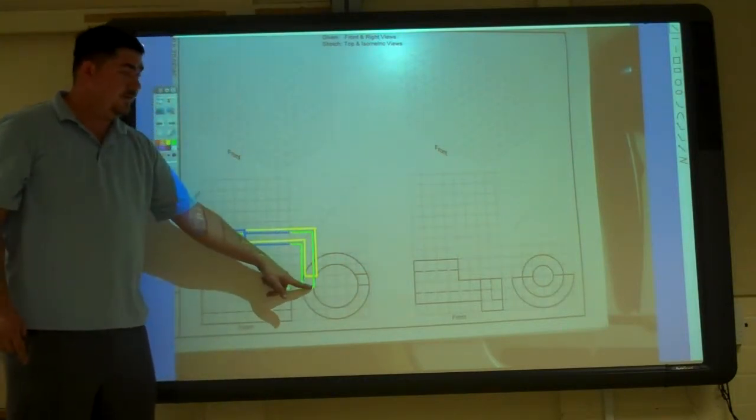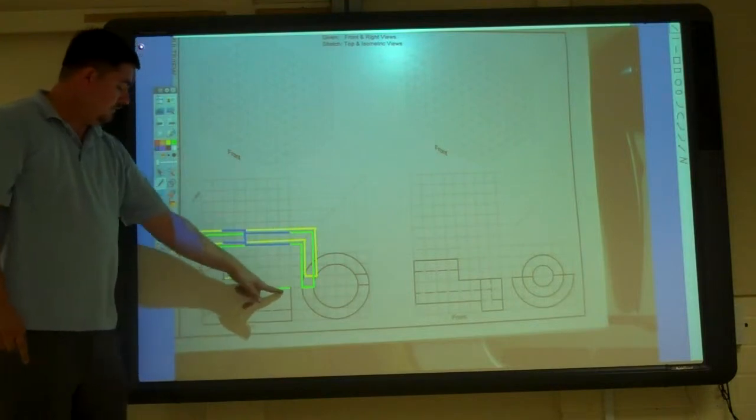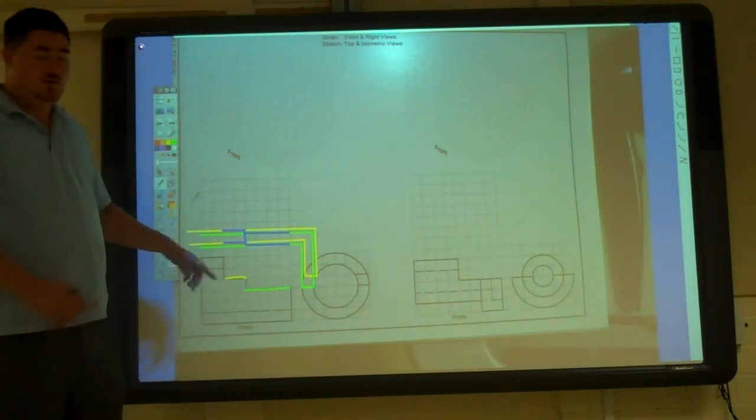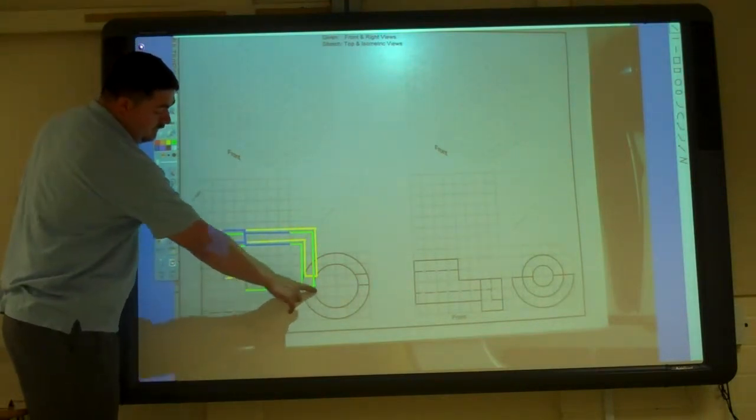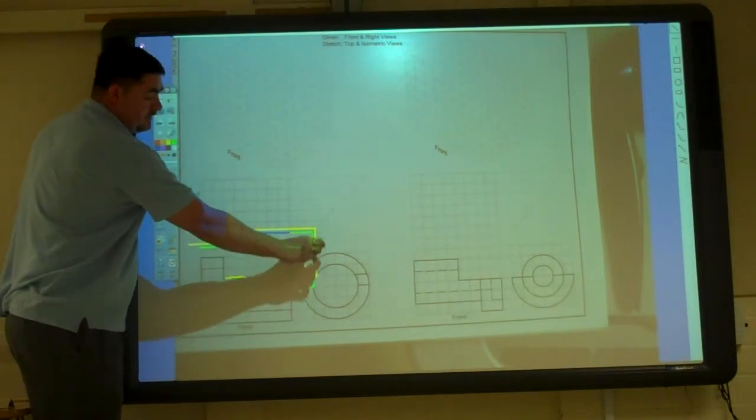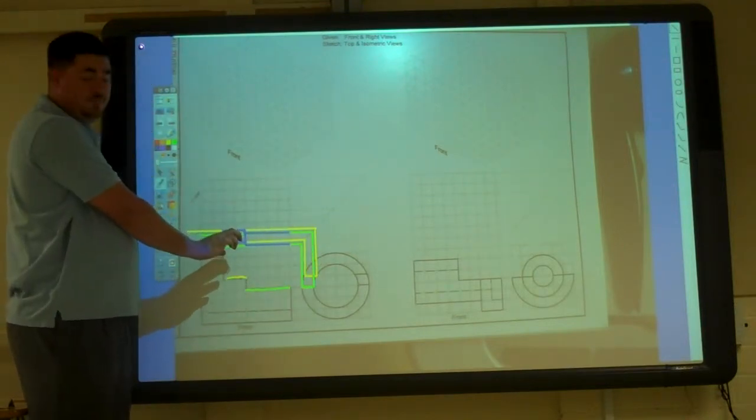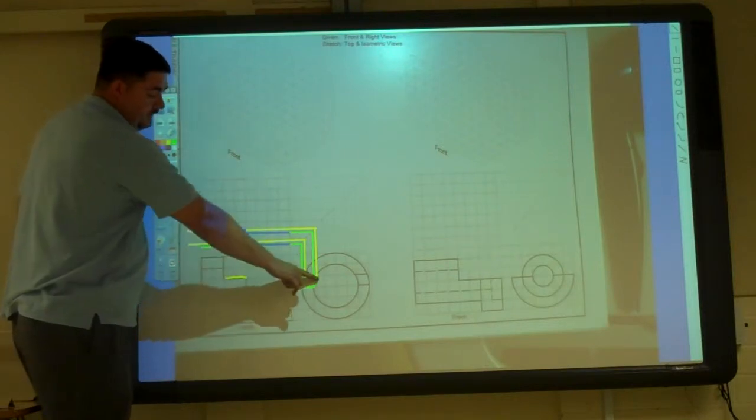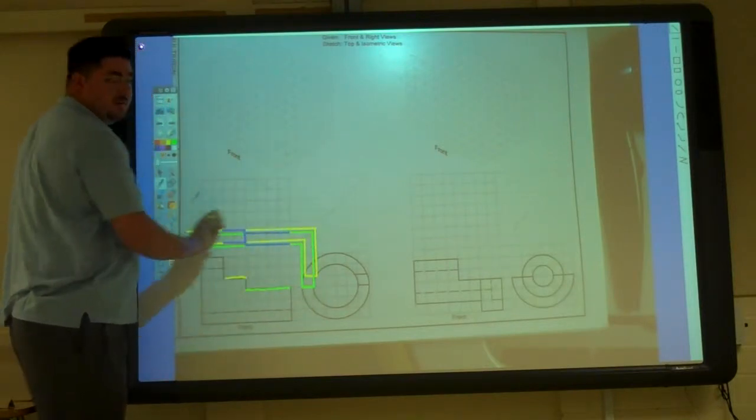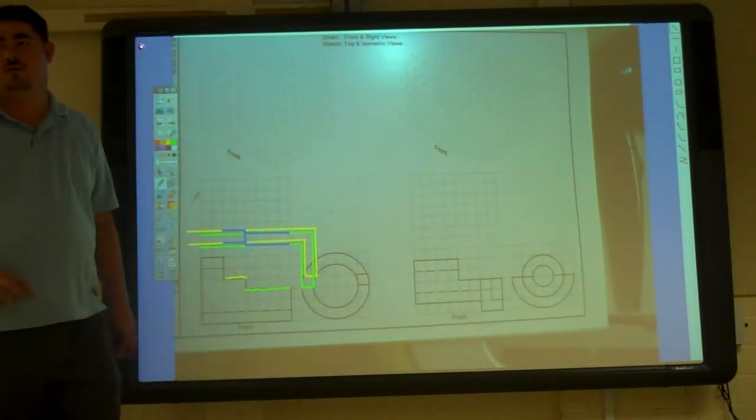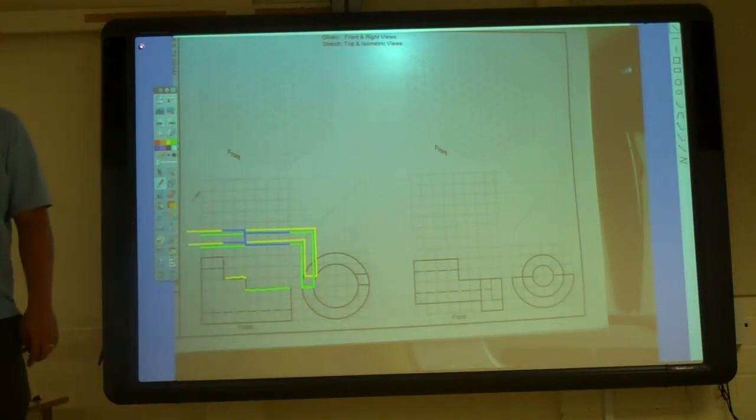And so it's got a flat here and a flat there, flat there, flat there. So on the green line, it's at this level, so you have to project those edges. Then here, it's at this level, so we need to project those edges. Anyone else have questions on it?